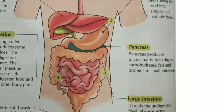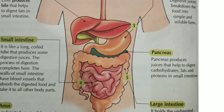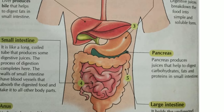Now the food is in the small intestine. In the small intestine, there is also a juice called intestinal juice, which is mixed with the food. The food is completely digested and broken down into simpler substances. When the food is converted into simpler substances, it means digestion is complete.